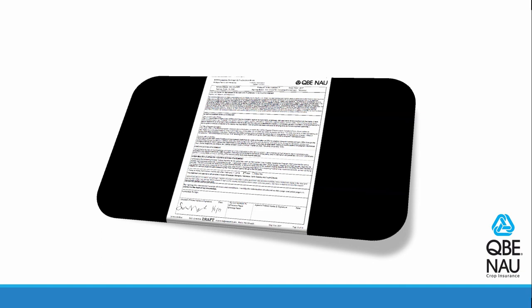Once the insured has signed and dated it, you can sign and date it and you are good to go. At that point, you can process the information in EasyRouter Pro and you're done. We really hope that this helps speed up the process of entering and completing acreage and production reports for you.